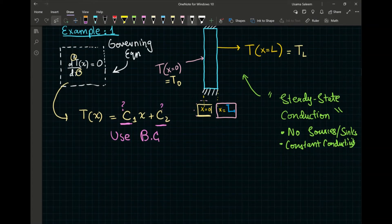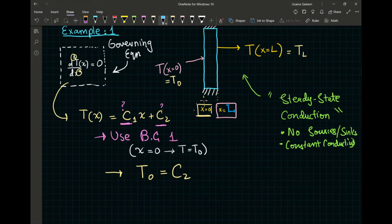So by using my boundary conditions, let's say I want to use the boundary condition at x equals zero, corresponding T equals T₀. If I use that boundary condition, I'll get my boundary condition one, and I get T₀ equals C₂. I hope you guys see that. Simple algebra.